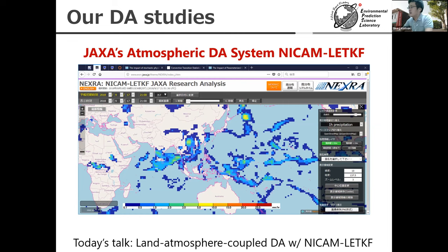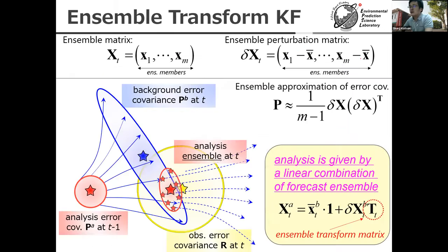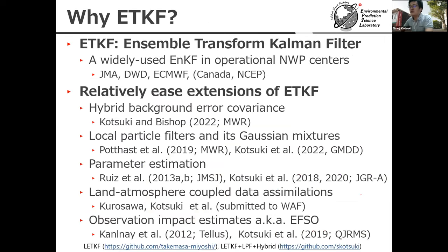In our group, we are using the Ensemble Transform Kalman Filter. This Ensemble Transform Kalman Filter is a kind of ensemble Kalman filter. The ensemble Kalman filter can produce the posterior analysis ensembles by combining the observations and the ensemble forecast. There are several solutions to produce this analysis ensemble, and this Ensemble Transform Kalman Filter provides the analysis ensemble as a combination of forecasts. We use it because it is widely used in operational numerical prediction centers such as JMA, DWD, and ECMWF.